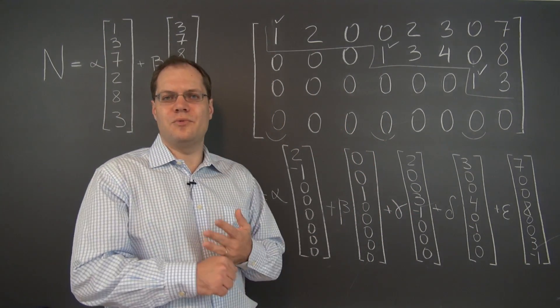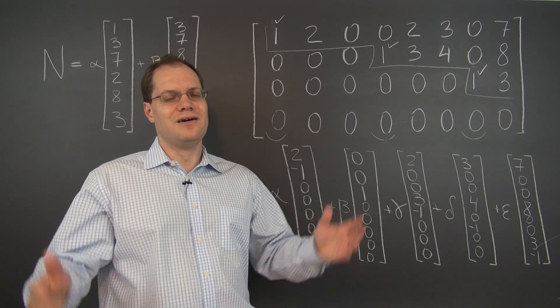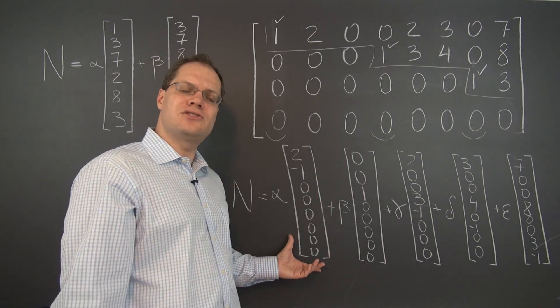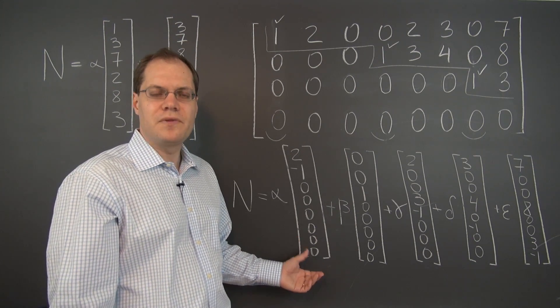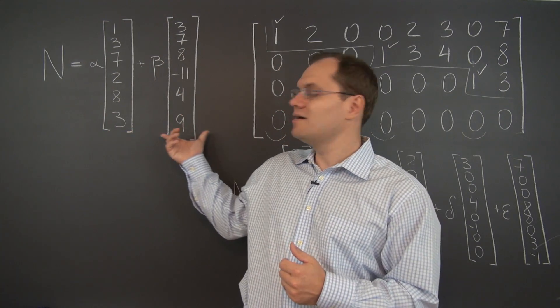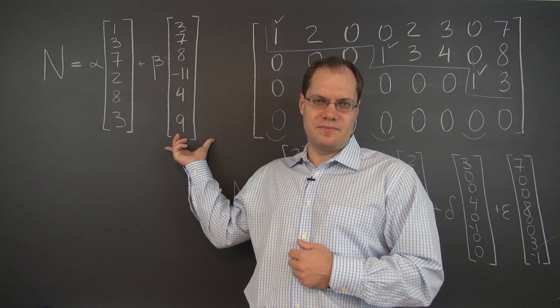So maybe without using the word reduced, just the row echelon form of something—I don't know what—but it certainly has a very special structure. But what if the null space is given in a way that doesn't have that special structure?